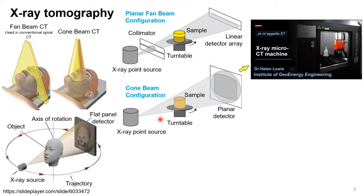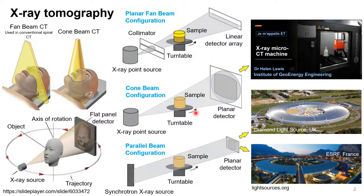This is a typical scanner from our lab — the good thing is you can see through the window while doing the experiment, and it's quite spacious. Another configuration is the parallel beam geometry, which you generally find at synchrotron facilities. The good thing about that is the time resolution — you get about one 3D image per second, whereas in a lab-based scanner the same image can take hours. So when imaging dynamic processes like multi-phase flow, we generally go to synchrotron-based sources.